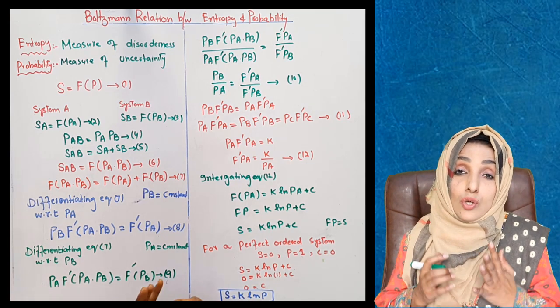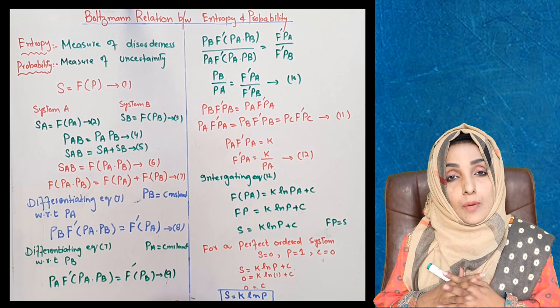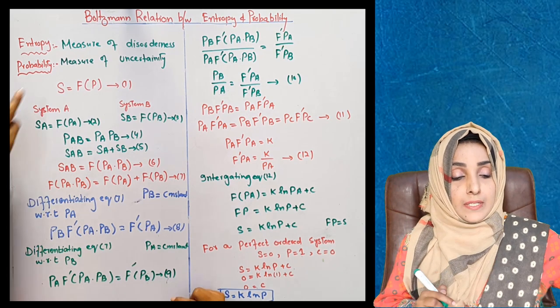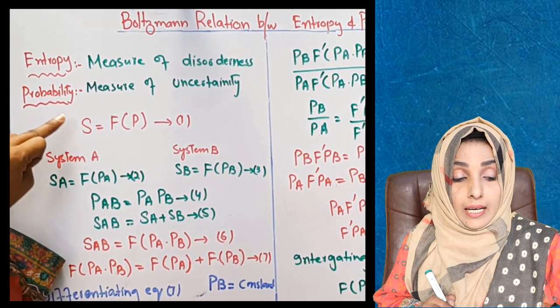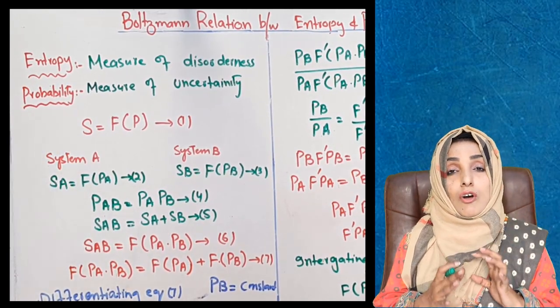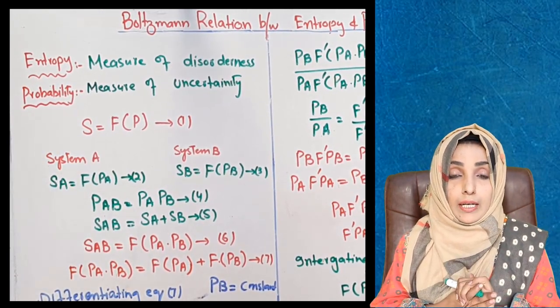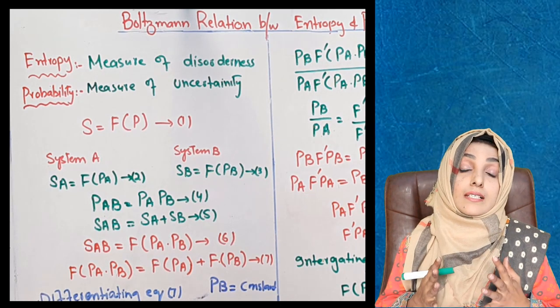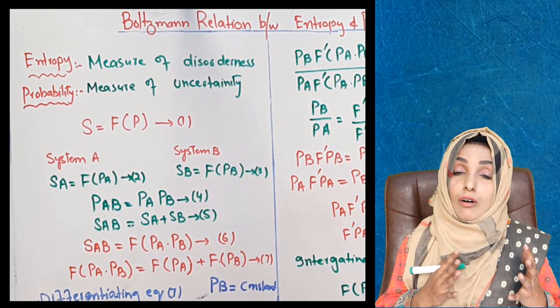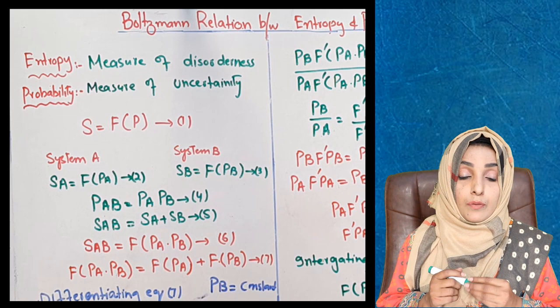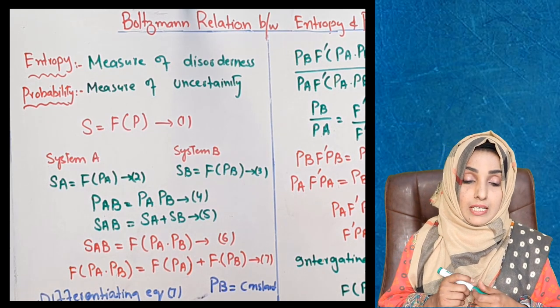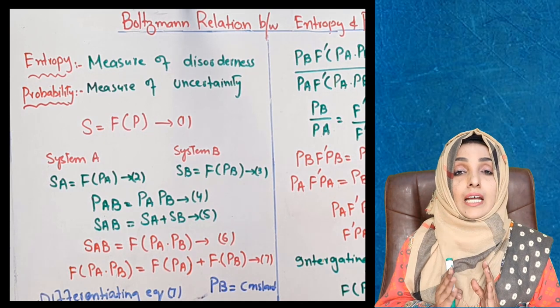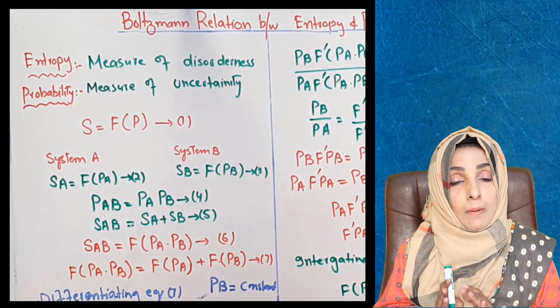The more disordered a molecule, the more entropy it has. We represent this entropy or disorderness by term S. And probability is the measure of uncertainty of any system, which we represent by letter P. We can say that entropy is the function of probability.